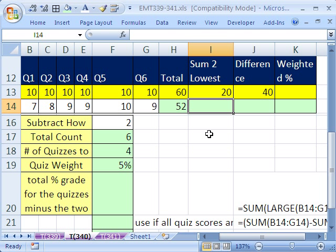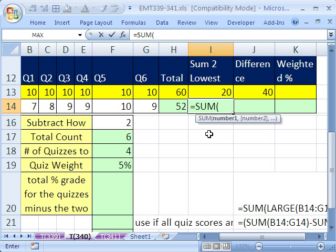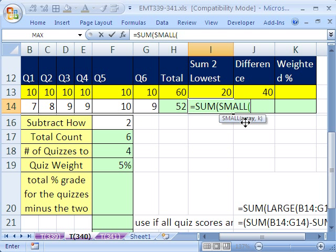Now, sum the two lowest. We're going to use equals sum, and then we're going to use the small function. The min function will find the minimum, the lowest. But small can find the first, second, third, fourth, fifth smallest, et cetera. So we want to take this whole range. And the trick is, this k right here, we could put a 1 and that would give us the min, or a 2 and that would give us the second smallest.